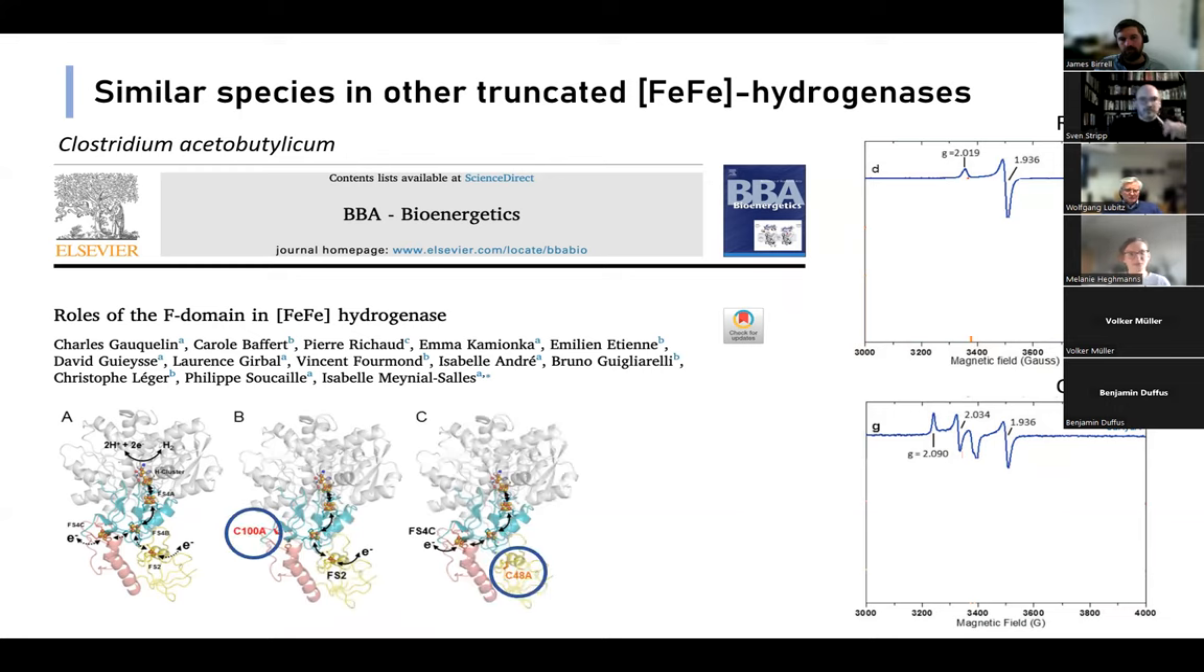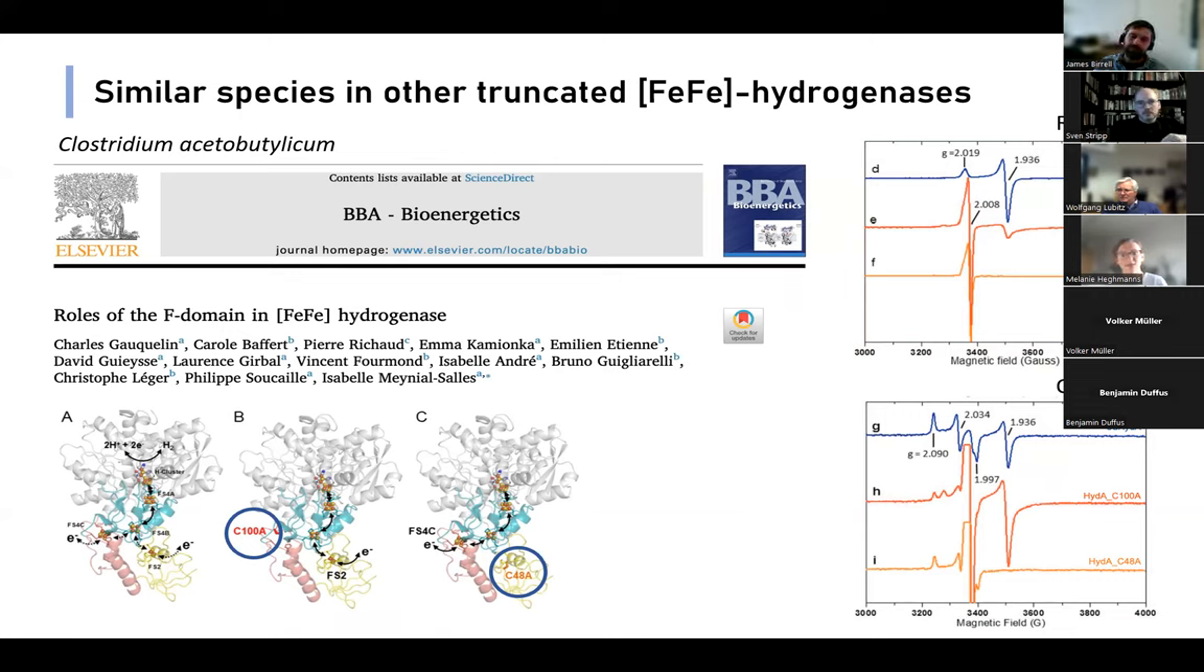Lastly, we had an overall look and looked into other wild-type iron-iron hydrogenases to see if we can find a similar species. That was not the case. However, when we looked at truncated iron-iron hydrogenases, we actually found one or two. When we look at the C. acetobutylicum hydrogenase, this one has four additional iron-sulfur clusters. In this publication, they knocked out either the FS4C or the FS2 cluster. When they took EPR spectra from it, you can see that in the reduced and oxidized state, they observed a signal very similar to ours. And intriguingly, it also increased significantly in intensity when they oxidized the hydrogenase.